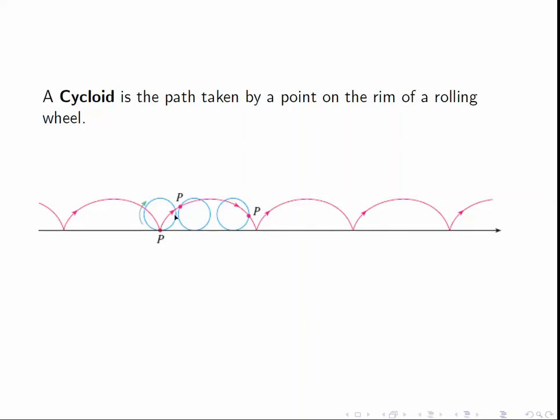What we want to do is find a description of these points in terms of some parameters describing how far the wheel has turned. So let's see how we do this.